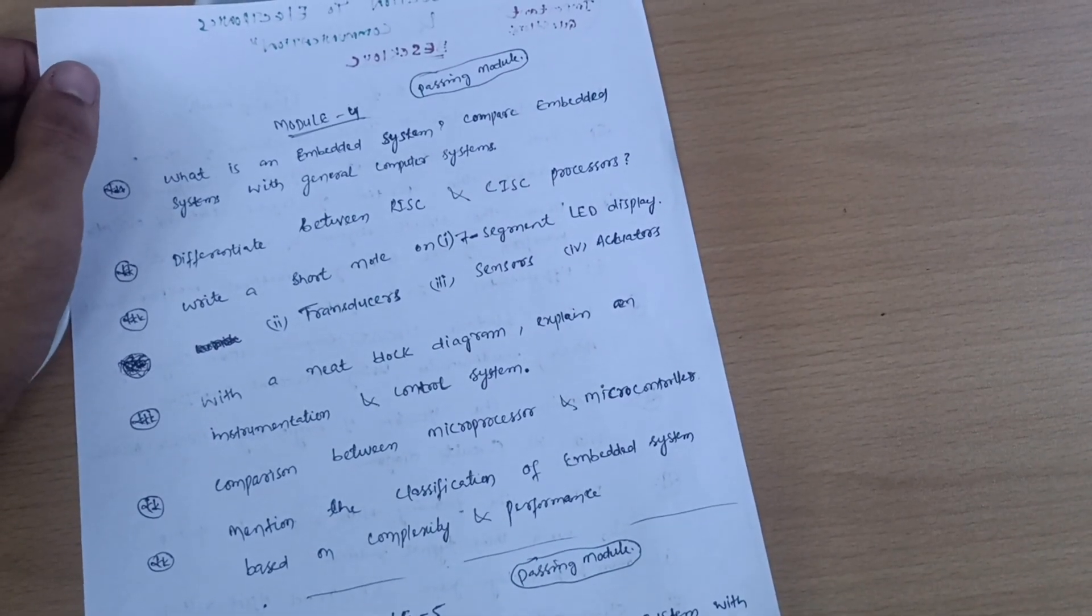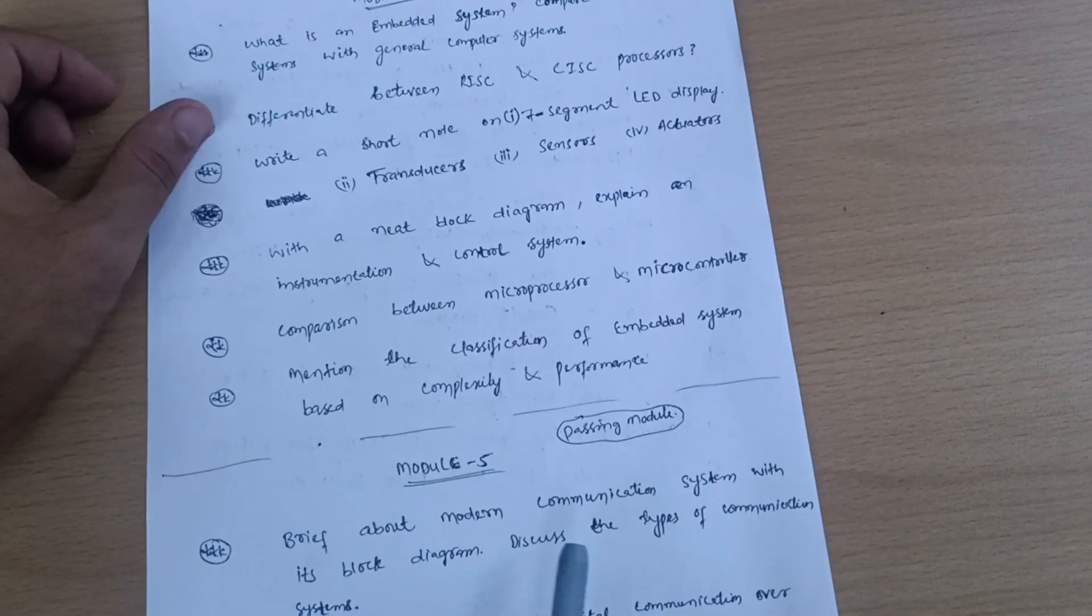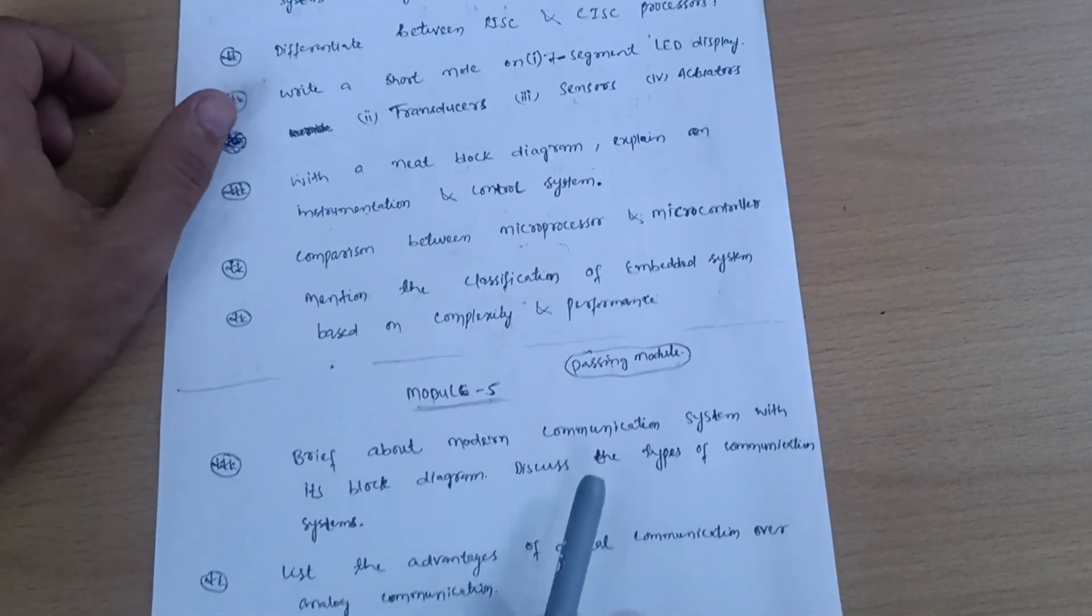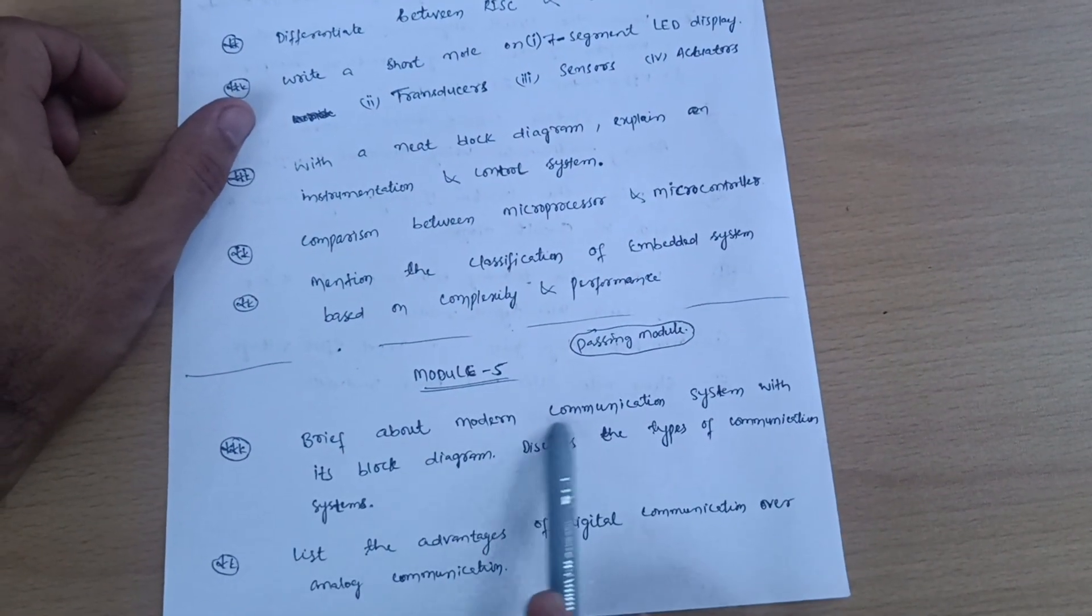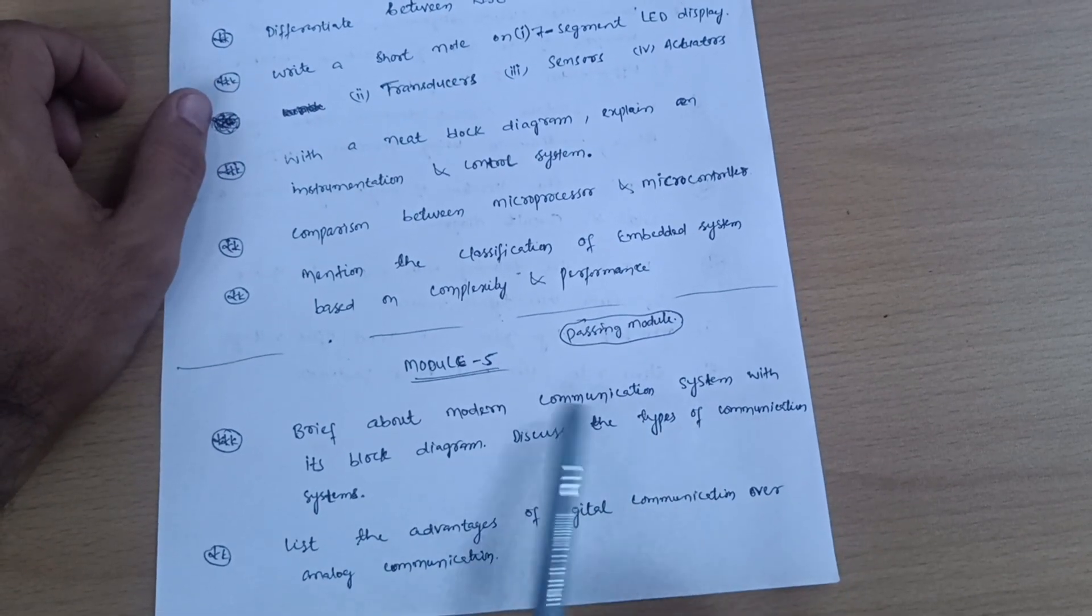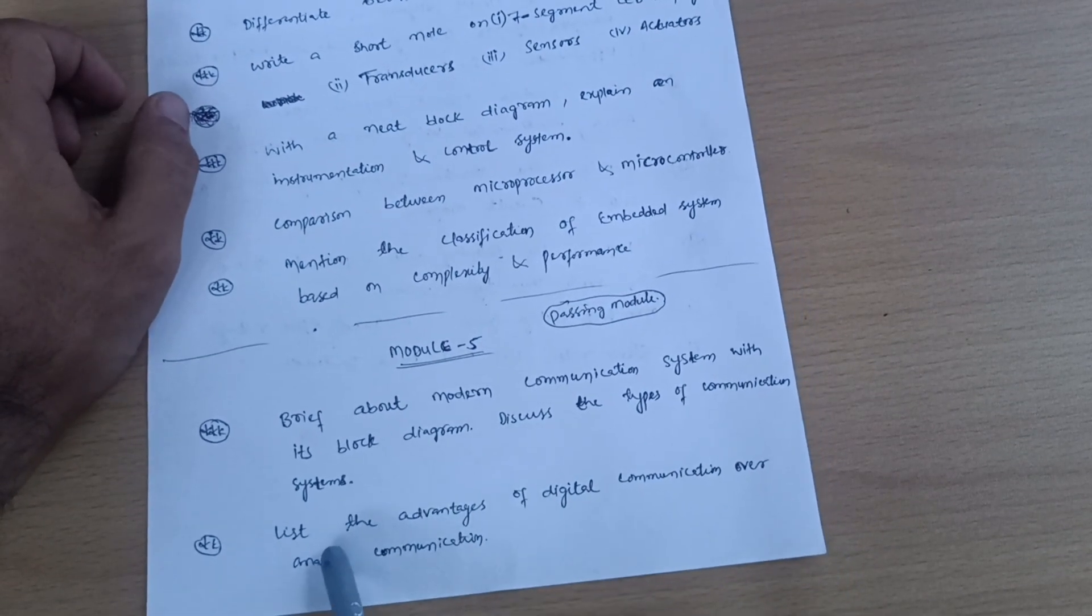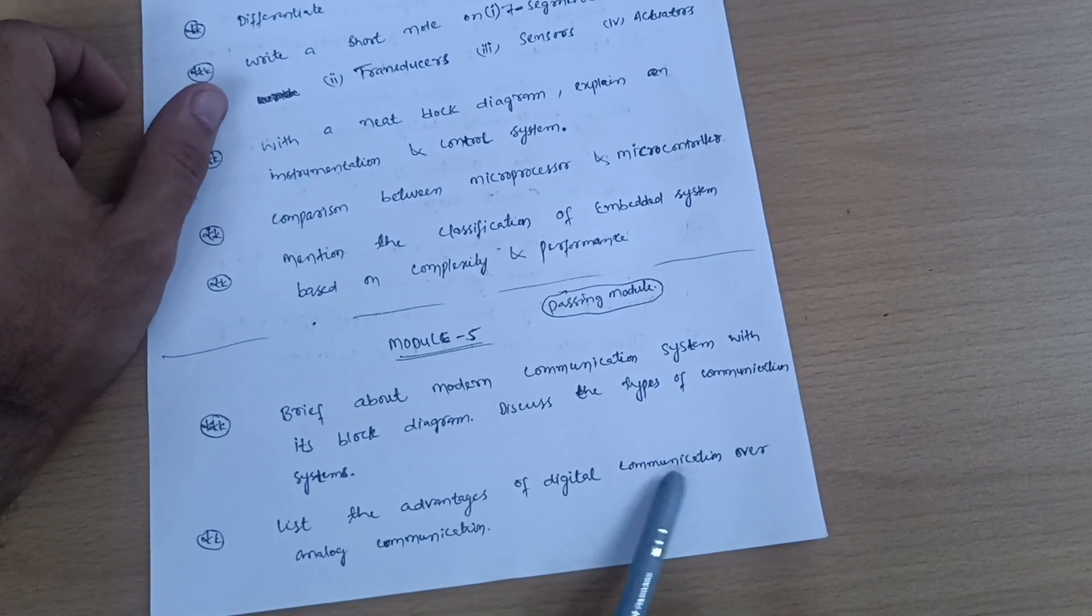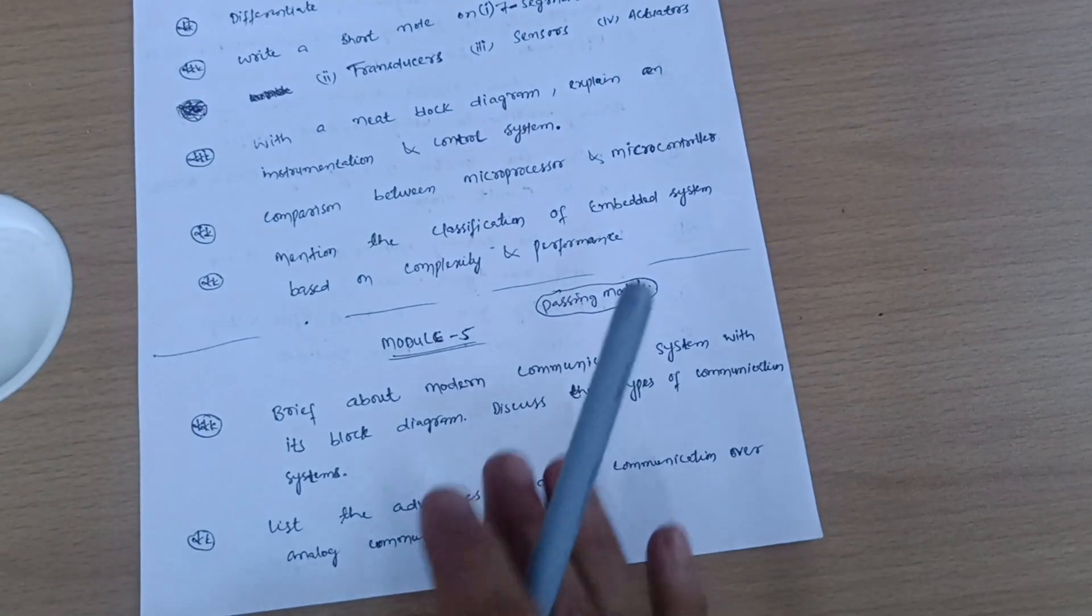The next passing module is Module 5. You have to cover: brief about modern communication system with block diagram, discuss the types of communication systems, and list the advantages of digital communication over analog communication.